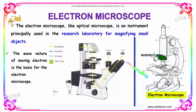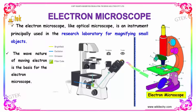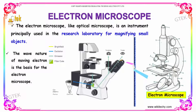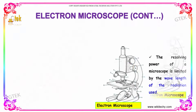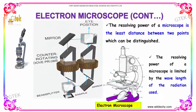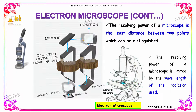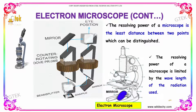You are able to see the electrons moving. The resolving power of a microscope is the least distance between two points which can be distinguished. The resolving power of a microscope is limited by the wavelength of the radiations.